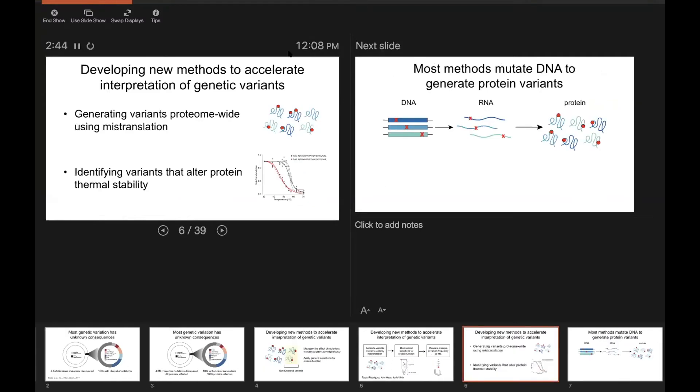So today, I'm going to talk about two things. First, how we actually harness mistranslation to generate pools of protein variants. And then, how we can look at these variants and identify those that alter a property of the protein. And in the example I'm going to show, the property is thermal stability.